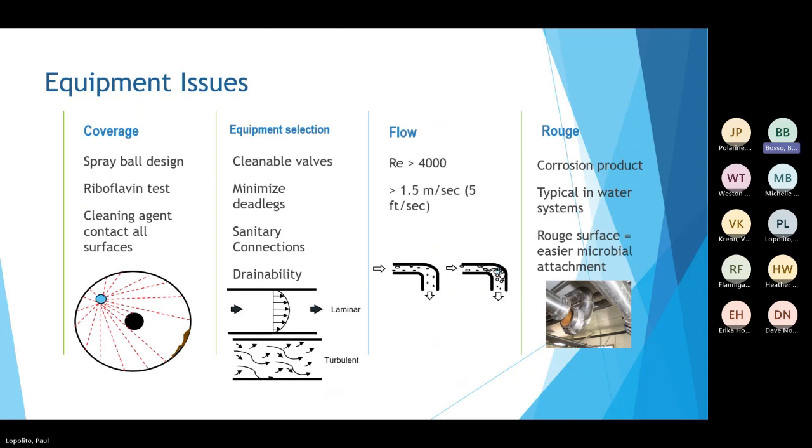Turbulent flow is also required to prevent microbial growth. A Reynolds number of greater than 4000 typically achieves turbulent flow. And this is equivalent to 1.5 meters per second or 5 feet per second. As seen in the second two photos, the first photo is a laminar flow, which would allow microbial growth on the edges as opposed to the bottom image, which is turbulent flow.